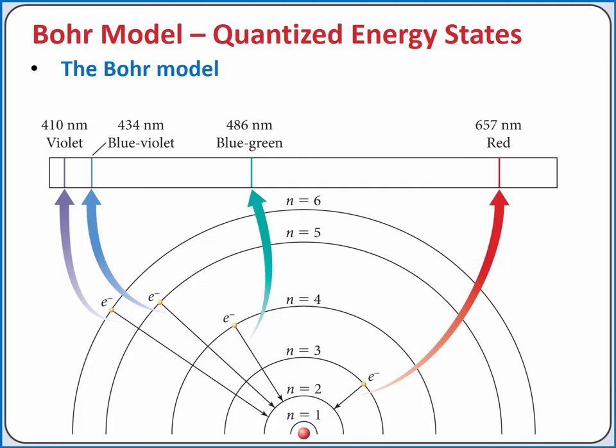Each of the distinct wavelengths present in the atomic spectrum for an atom correspond to transitions between two energy levels in the atom. In hydrogen, for example, when an electron drops from the n equals 3 to the n equals 2 energy level, it emits a photon with a wavelength of 657 nanometers, which corresponds to red light.